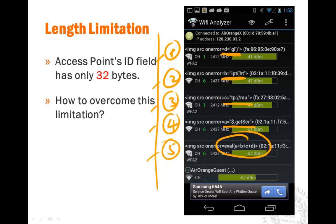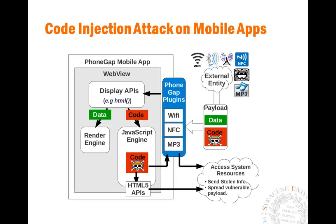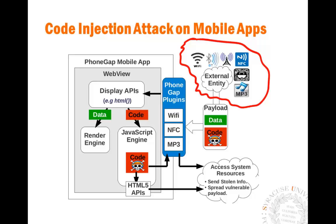So how exactly does this work? Whenever you try to access external resources — whether it's Wi-Fi, NFC, or MP3 — that data comes from the outside world and is untrusted.